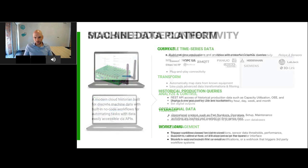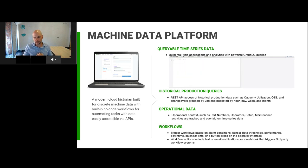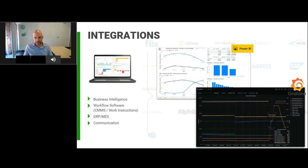This data is transformed into a common model and transmitted to the Machine Metrics cloud where you can run your applications and analytics. Once available, you have a cloud historian where you can query that information and access it through APIs. You can build your own applications on top of this platform, but what's unique is that we overlay operational data — human context — that ties into your machine condition data so you have the full story. Workflows are available that can be triggered based on these conditions. We can also integrate into other best-of-breed systems — whether it's an MES, BI system, or maintenance software — so the data is live, real-time, and accurate.